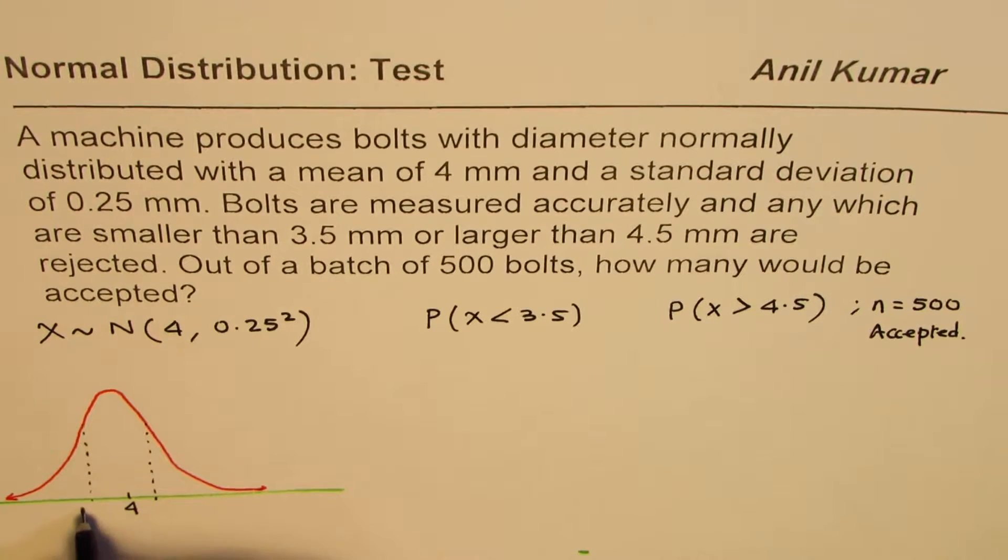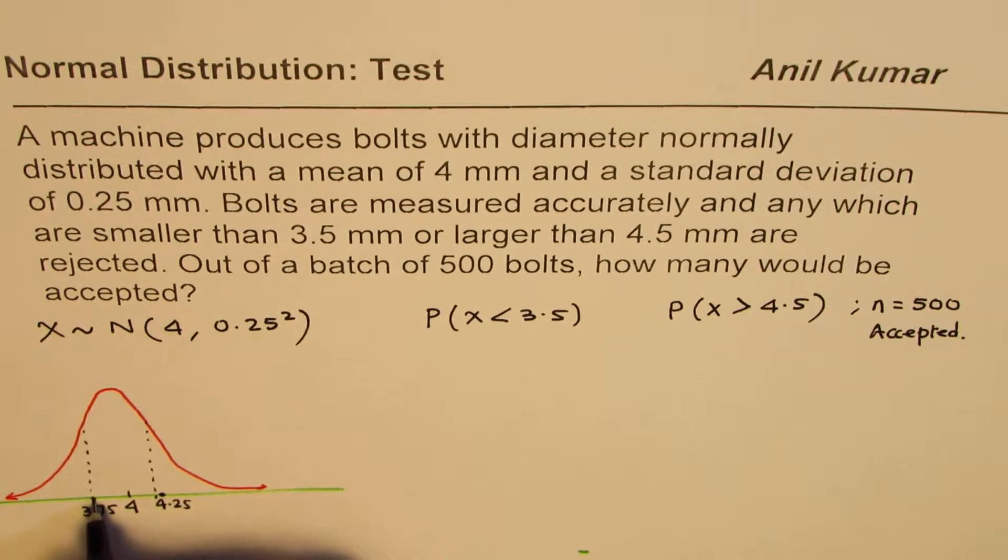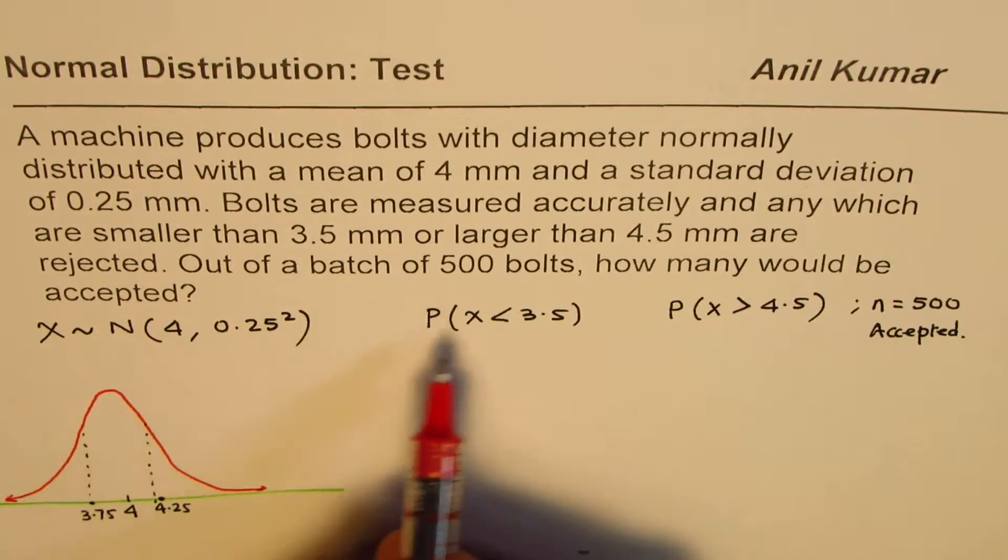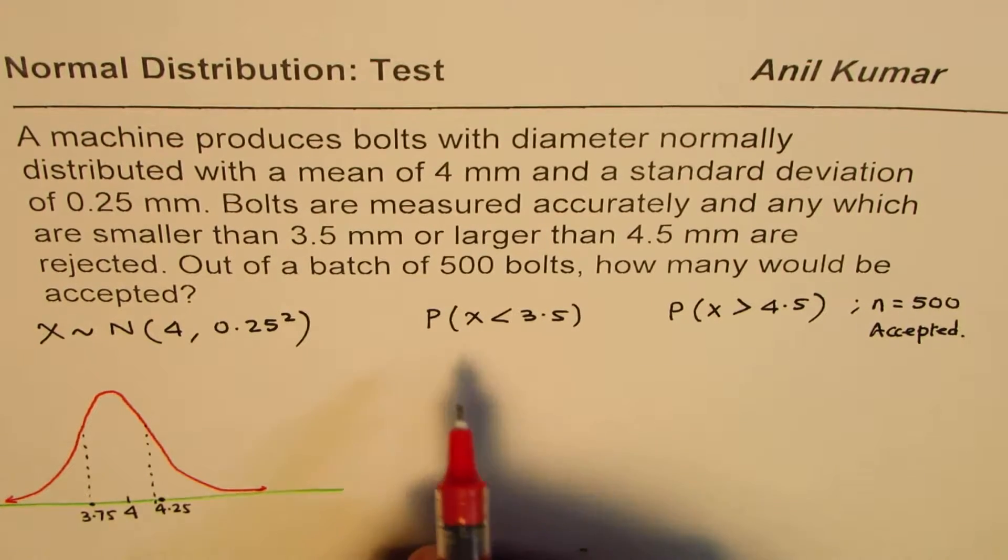This peak will be at the mean which is 4, and these change in curvature, wherever point of inflections are there, these are 0.25 away. So we'll write this as 3.75 and 4.25 correct, so 0.25 away.